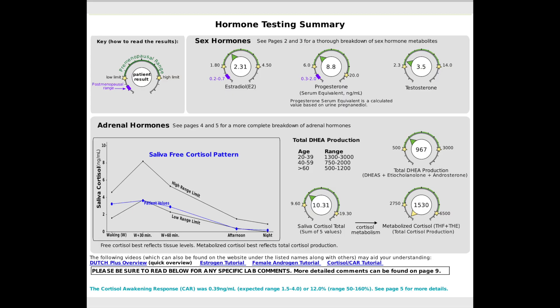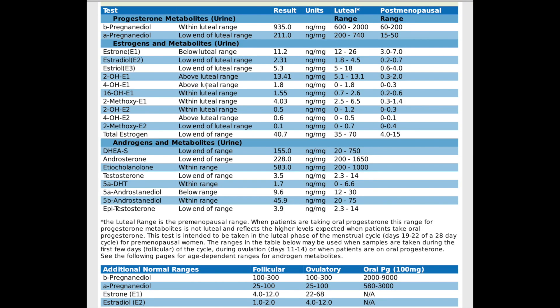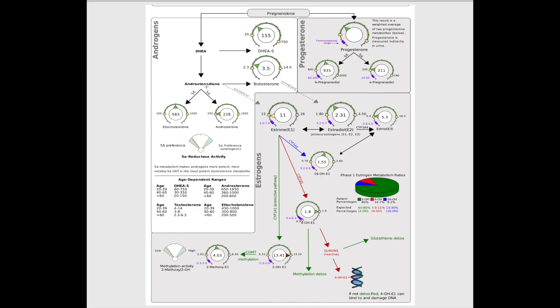Let's jump into the test on the computer so I can give you a zoomed-in perspective. Here's the DUTCH test — this is the first page, the summaries page, showing all your overall levels. As we go through the test it provides much more thorough explanation and detail. One quick thing: if you get a blood test done, they're only going to look at the estradiol marker of your estrogen, whereas in this test we look at three forms of estrogen — that's why it's so useful.